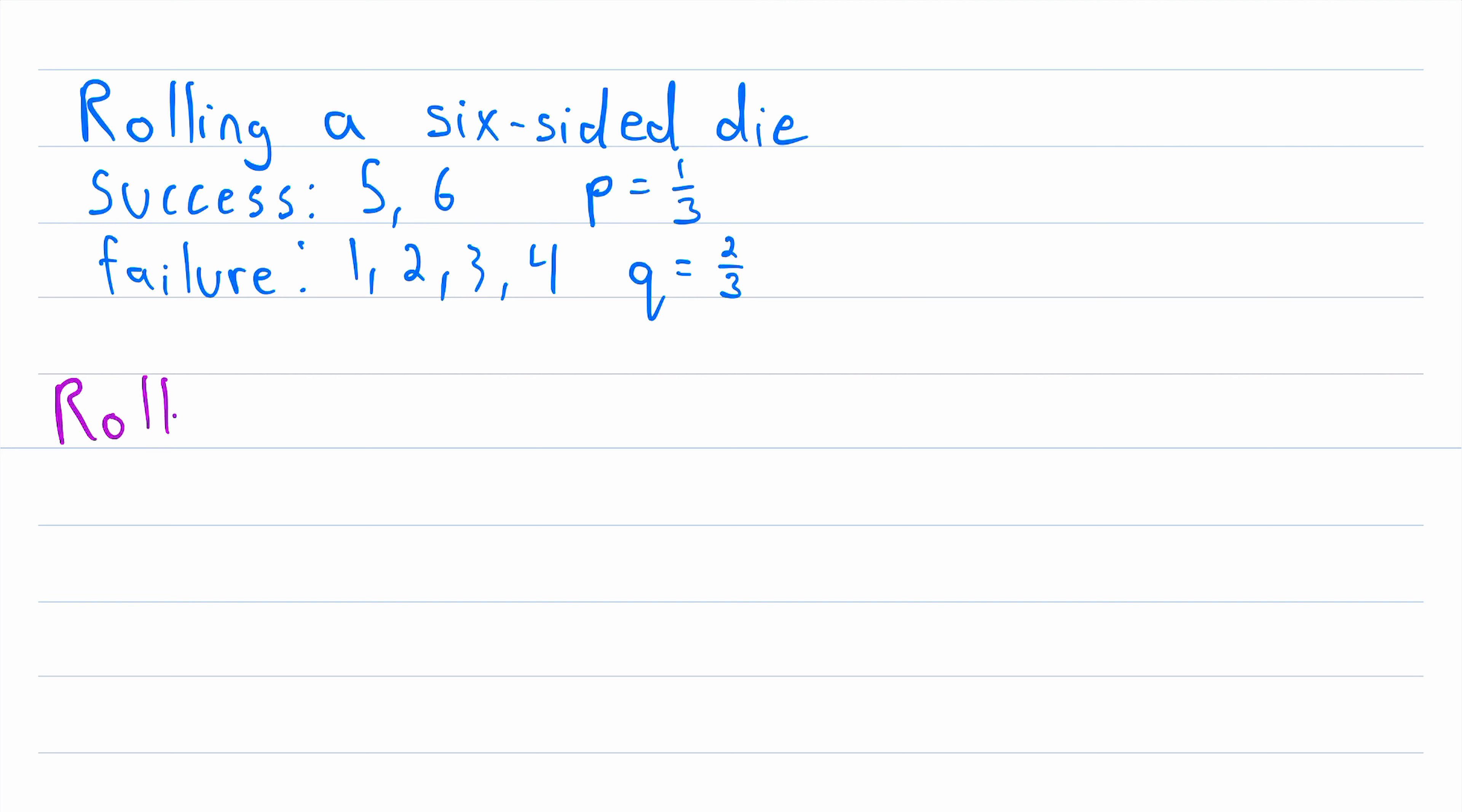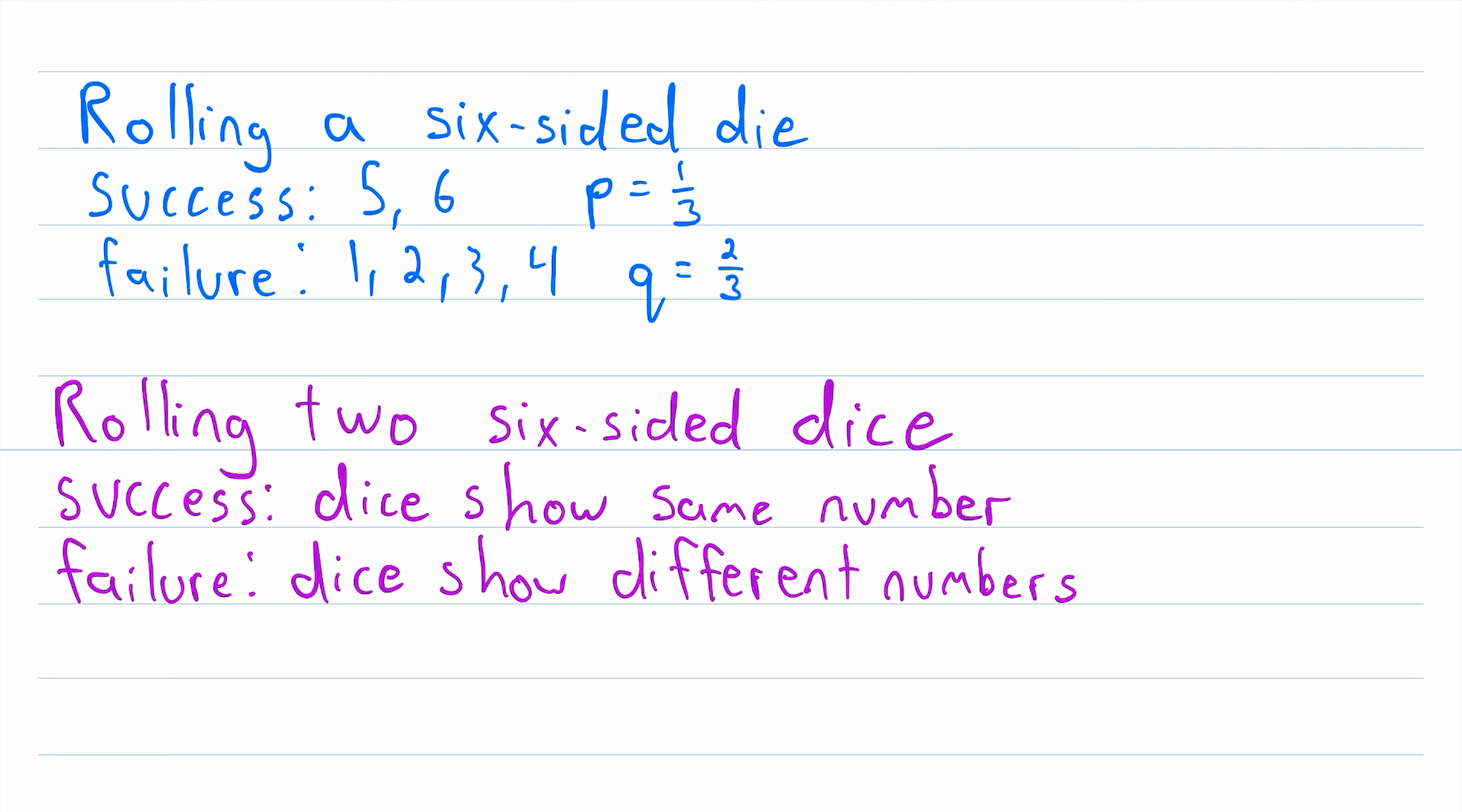Let's look at one more example of a Bernoulli trial before we go. Let's consider a trial where we are rolling two six-sided dice. We'll say that the trial is a success if the two dice show the same number. And we'll say that the trial is a failure if the two dice show different numbers. If you've ever played the board game Monopoly and gone to jail, then you've actually conducted this very Bernoulli trial. Just goes to show you that knowing your Bernoulli trials can be pretty important.